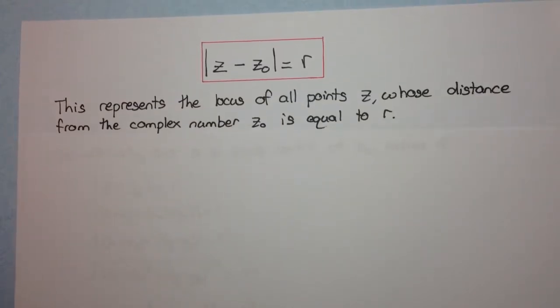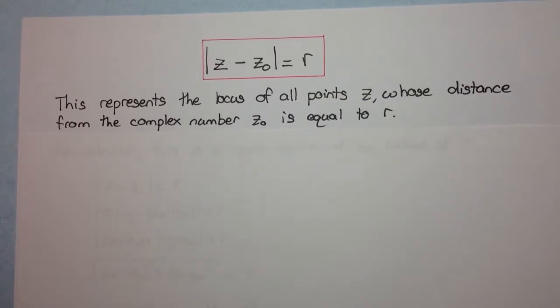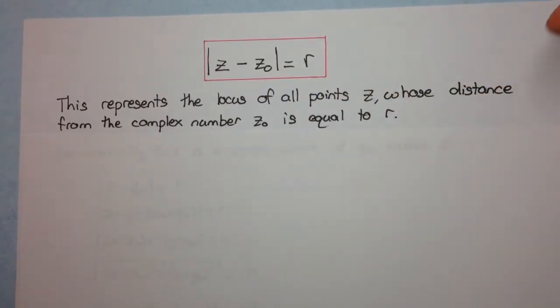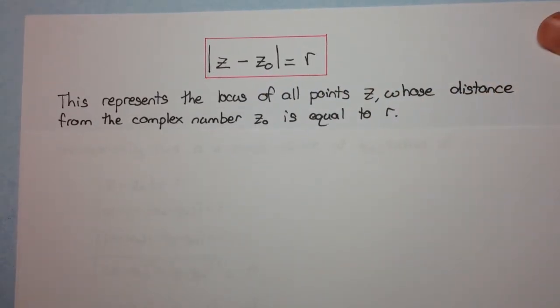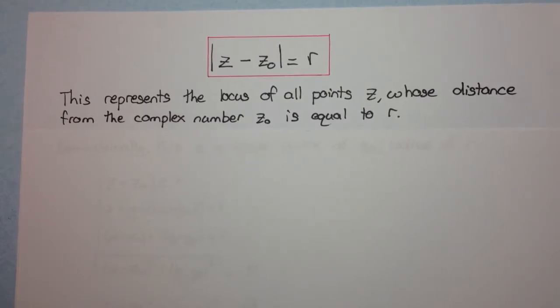Well, it reads in English, so this is the mathematical statement, but in actual English, this represents the locus of all points z whose distance from the complex number z₀ is equal to r. So we have a point z₀, and every point that z can take is r units away from the point z₀.